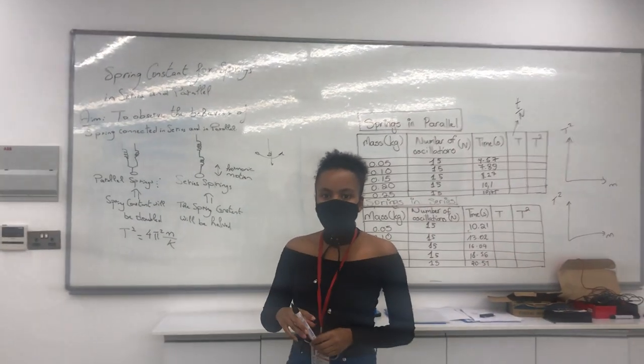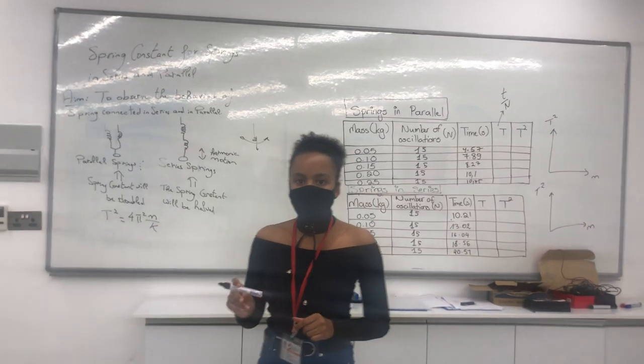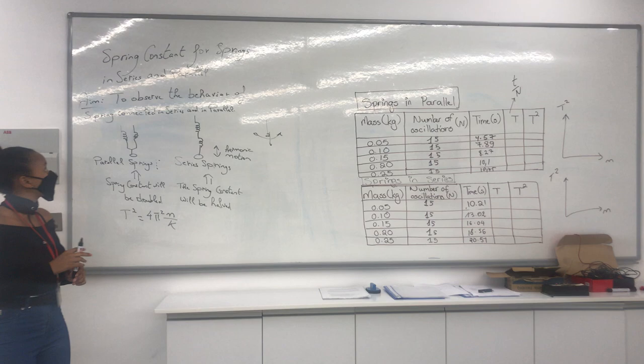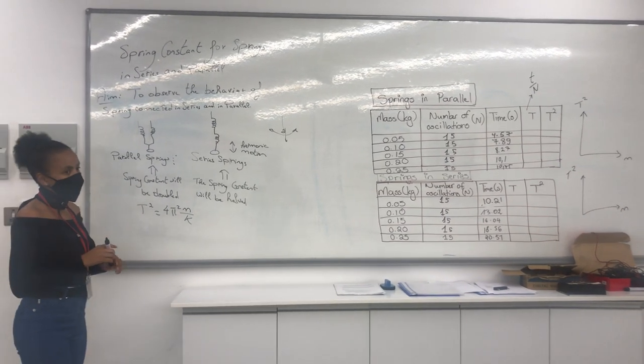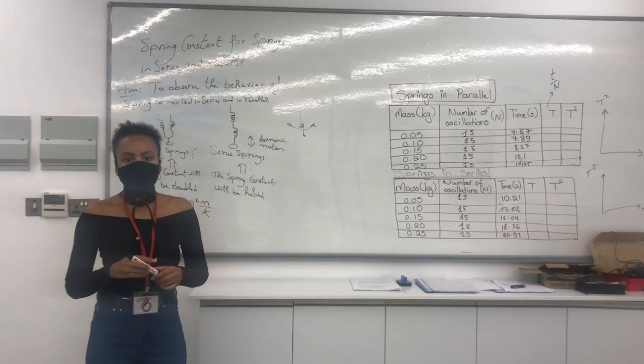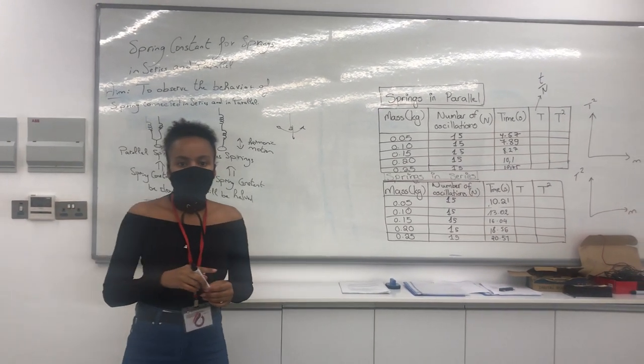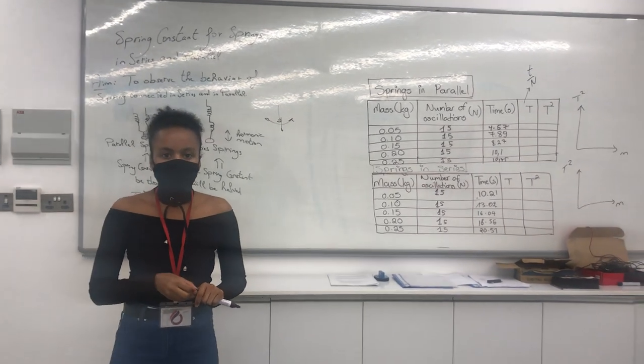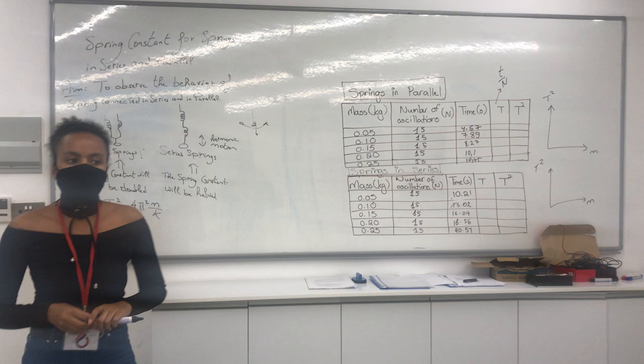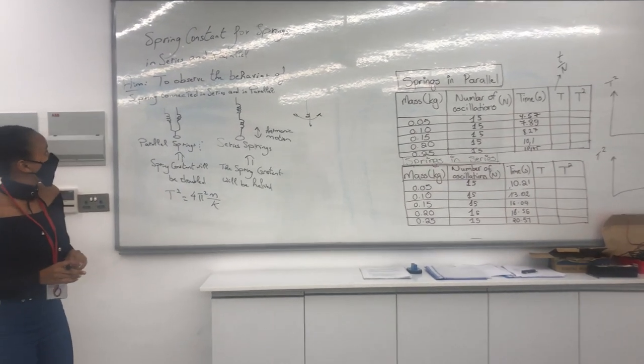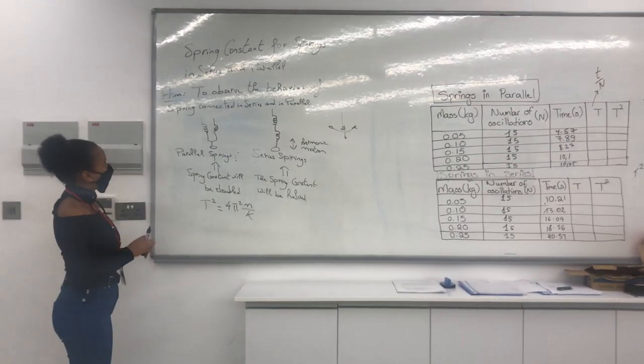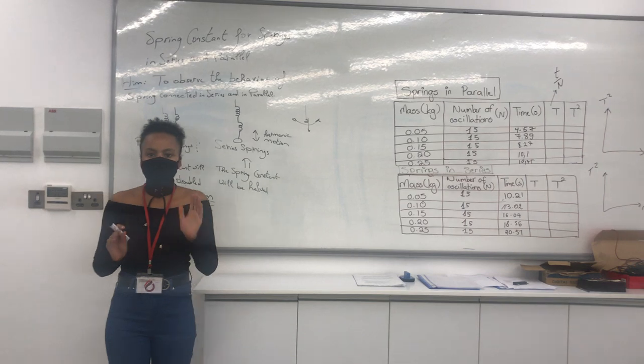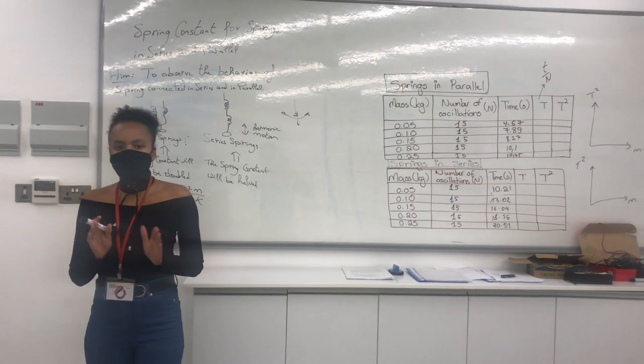Welcome to Experiment 3 for Physics 101. The title of the experiment is Spring Constants for Springs in Series and in Parallel. Last week's experiment was investigating the spring constant for a spring, just one spring, and we were measuring the length to calculate our spring constants. In this case, our aim is to observe the behaviour of springs connected in series and parallel. Obviously, we expect the spring constants to be different because of the manner in which they are connected.